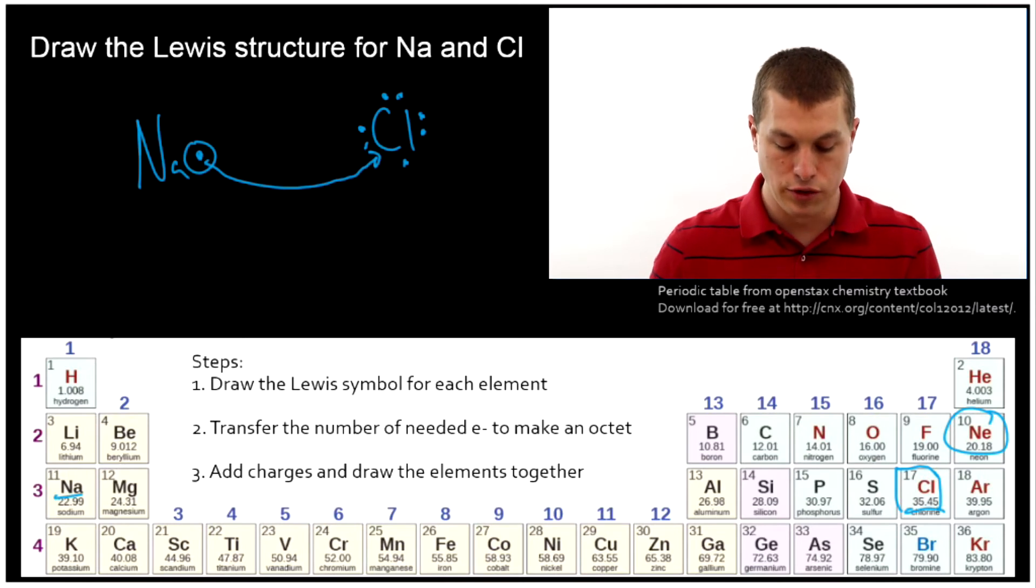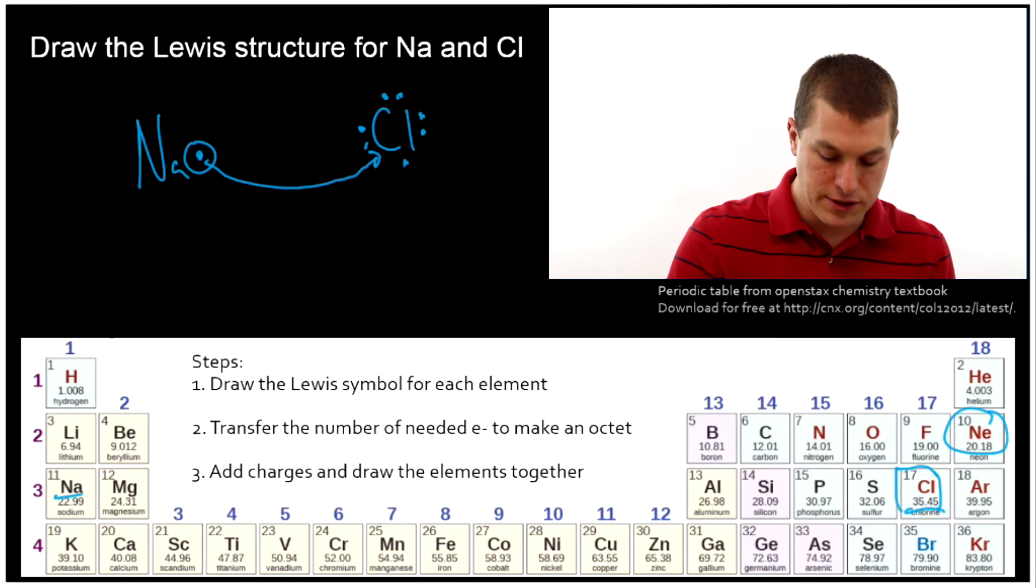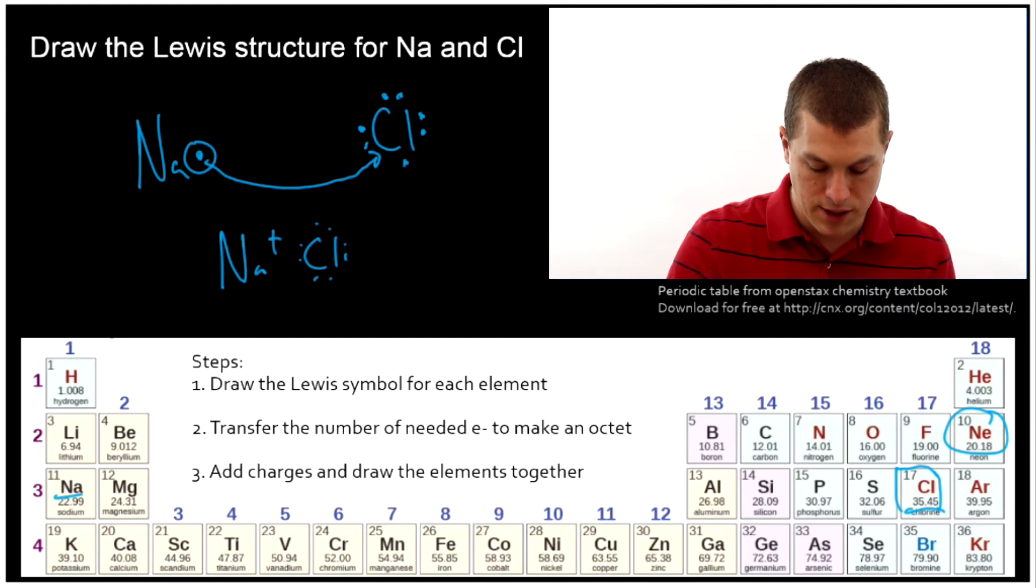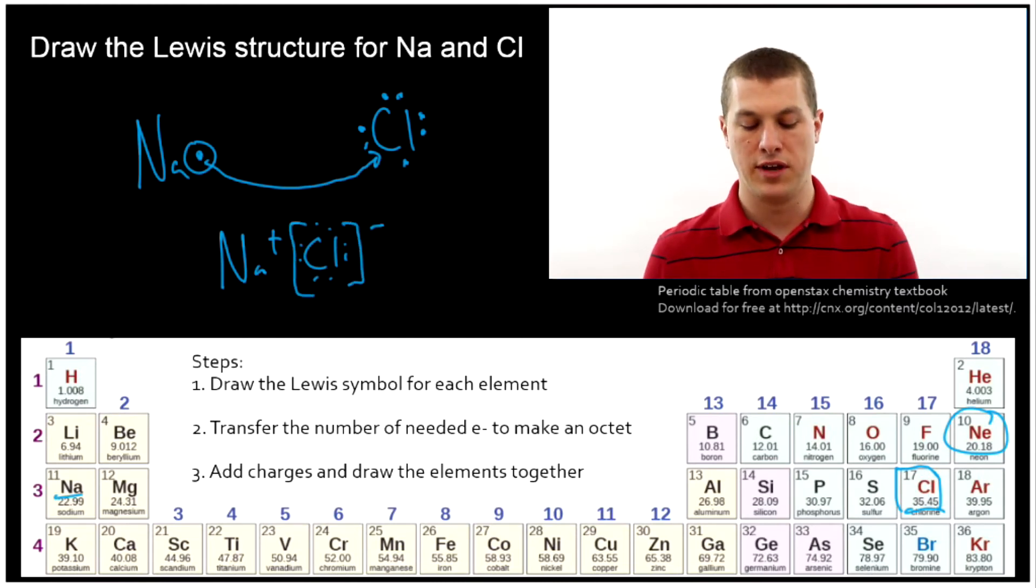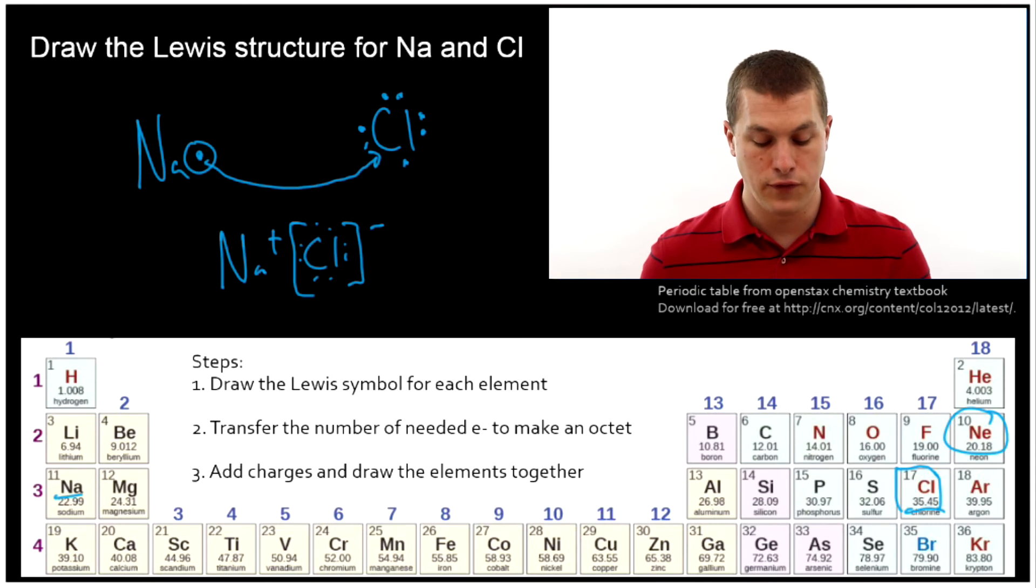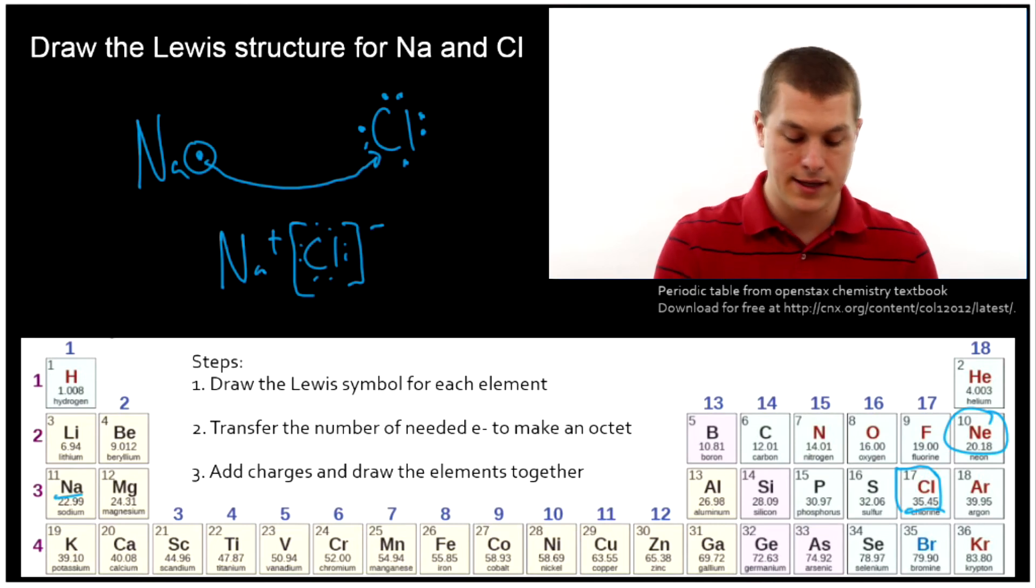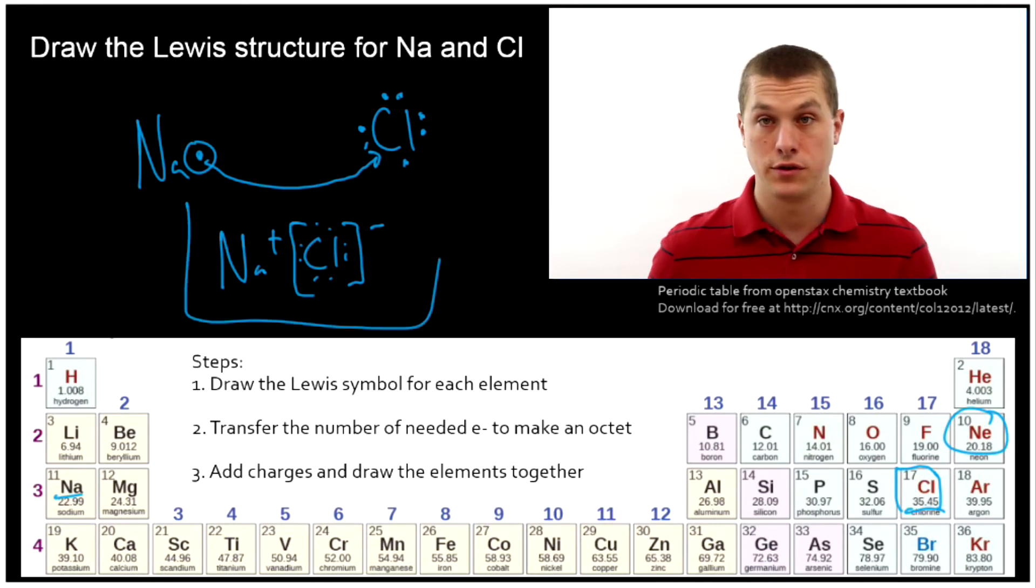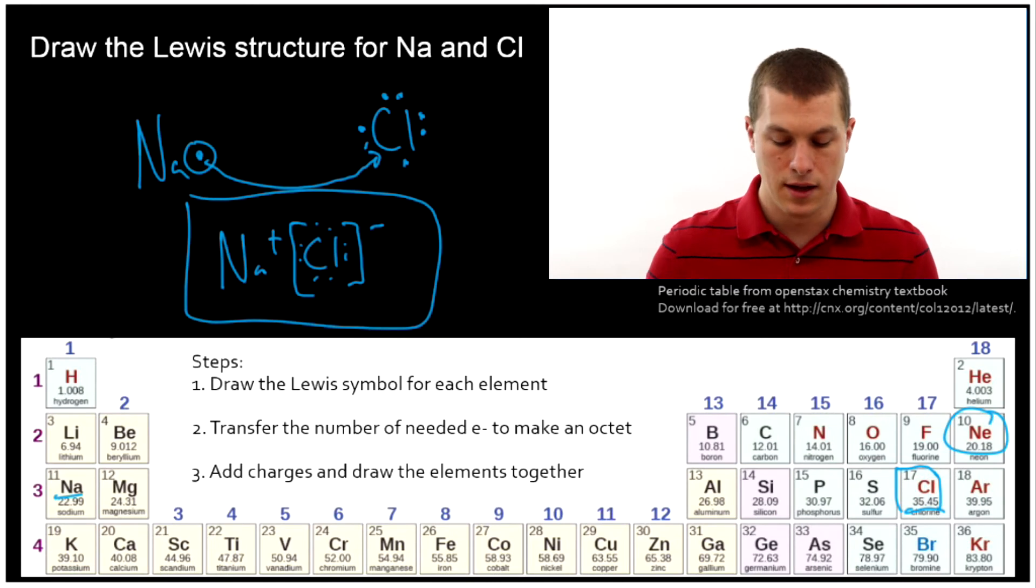So let's draw now the Lewis structure, that's step three, and we're going to put sodium, which is positively charged, and chlorine, which now has our eight valence electrons, which is negatively charged. And when we have electrons there, we're going to put it in a box and put a little negative sign outside of it. So that shows what's happened. Sodium has given up its valence electron, and chlorine has gained it to form sodium chloride, and this guy is the Lewis structure for sodium chloride.